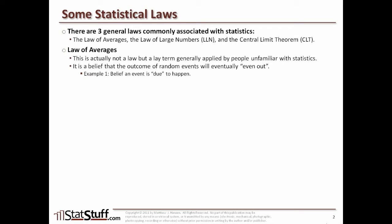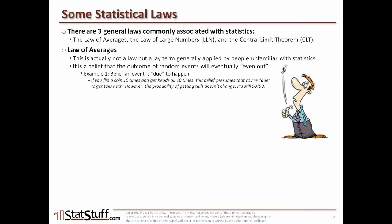The first example is the belief that an event is due to happen. For example, if you flip a coin 10 different times and get heads all 10 times, there's a belief that you're due to get tails next. However, the probability of getting tails really doesn't change — it's still 50-50 as long as it's an evenly weighted coin. However, if you're getting heads 10 straight times, since that's so unexpected, you might actually think the coin is unevenly weighted, meaning there could actually be a greater probability of getting heads again due to some bias in the coin.